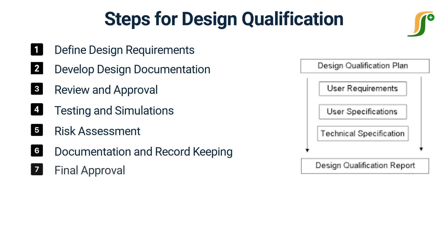Final approval: obtain final approval from relevant stakeholders, such as management, quality assurance, and regulatory authorities, before proceeding to the next stage of the project or system development. Periodic review and update: regularly review and update the design documentation as needed throughout the project or system life cycle to ensure that the design remains compliant with requirements and standards.